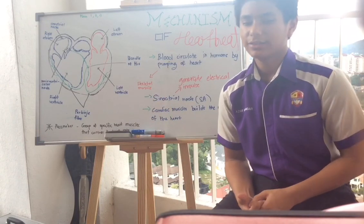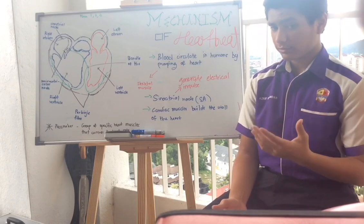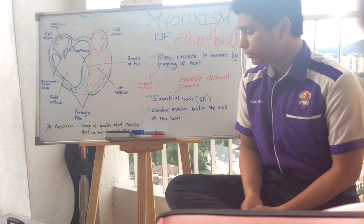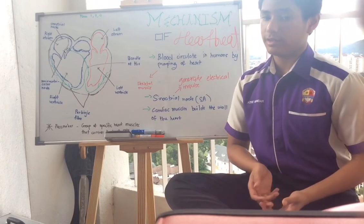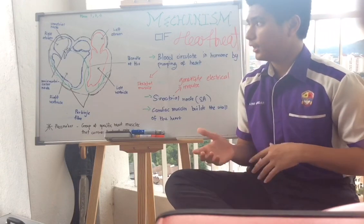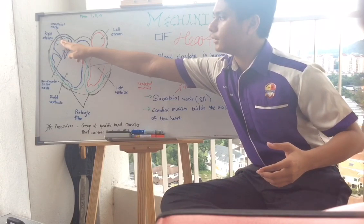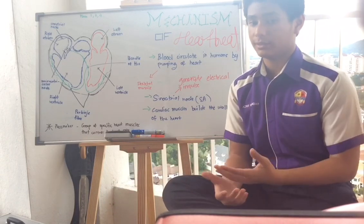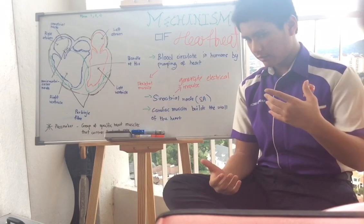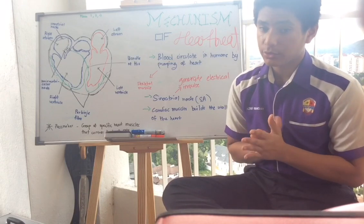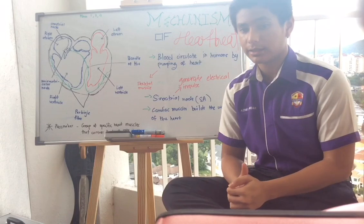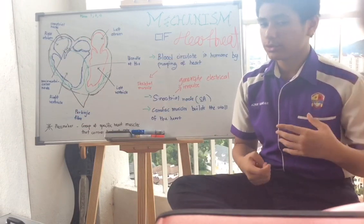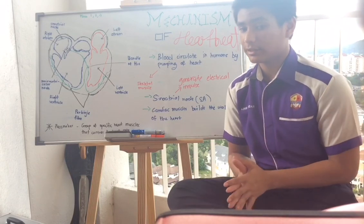The contraction of the heart is controlled by the pacemaker. The pacemaker is a group of specific heart muscles that controls the heart rate and contraction. The pacemaker generates electrical impulses. The main pacemaker is called the sinoatrial node. It produces electrical impulses that spread rapidly through both walls of the atria, causing the atria to contract rhythmically.